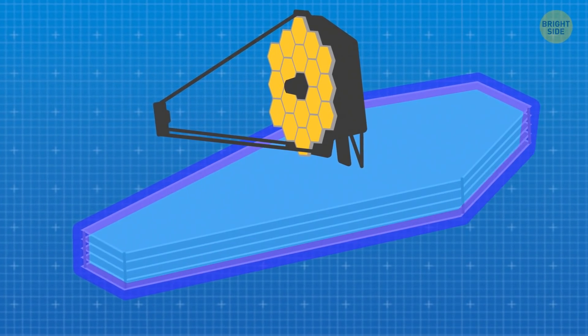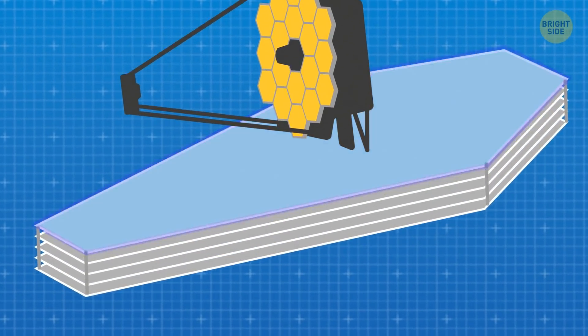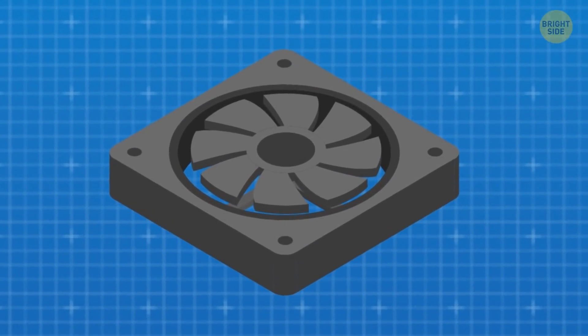The purpose of the sunshield is to help the JWST stay cold. The colder, the better. And colder is what the cryo-cooler is for.